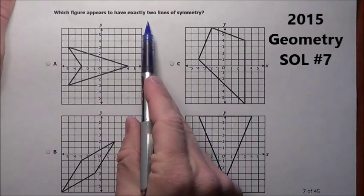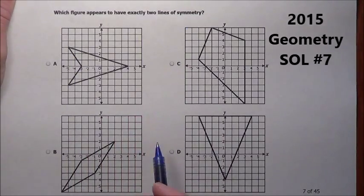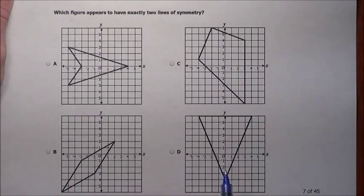Problem number seven. It says which figure appears to have exactly two lines of symmetry. So I want to draw a line through it so that one side flips over onto the other.